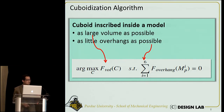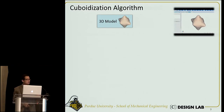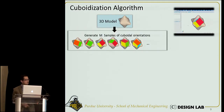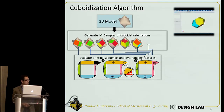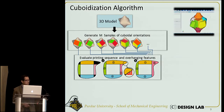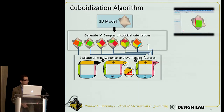We use a multi-loop optimization algorithm to solve this. Given a 3D model, we first sample M orientations, then generate M largest cuboids using those orientations and evaluate the overhanging features. As you can see, the printing sequence also affects the orientation of overhanging features — the same cuboid can have overhanging in sequence A but not in sequence B. So we evaluate all 30 possible printing sequences.